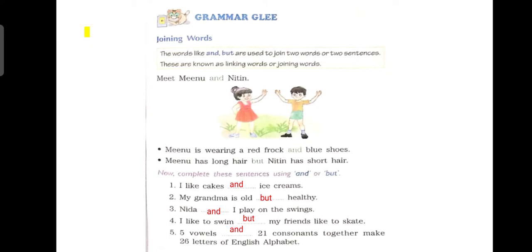So yahan pe Minu and Nitin ko join kara hai AND. So let's read this example. Minu is wearing a red frock and blue shoes. Minu ne red frock aur blue shoes pehne hai. Minu has long hair but Nitin has short hair. Dekhiye, Minu ke baal lambe hai par Nitin ke baal chhote hai.